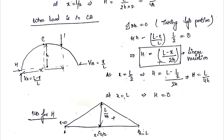This equation is for the CB portion. At C, x equals L by 2, giving H equals L by 4h. At B, x equals capital L, giving H equals 0. Plotting all values: for AC, H goes from 0 at A to L by 4h at C; for CB, H goes from L by 4h at C to 0 at B. Joining these with straight lines gives the ILD for the horizontal thrust.